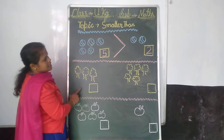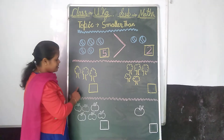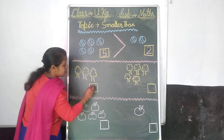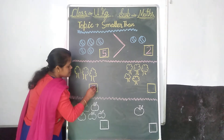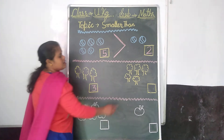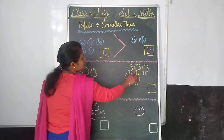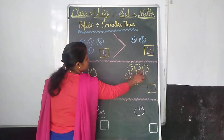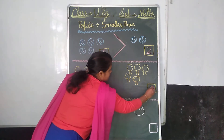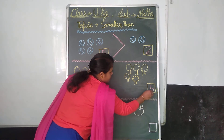Now look at the second picture. How many trees are here? 1, 2, 3. So I will write number 3. And how many trees are here? 1, 2, 3, 4, 5. I will write number 5.